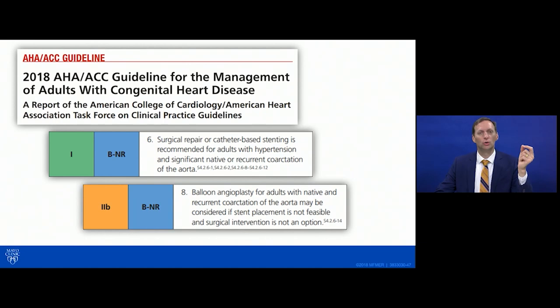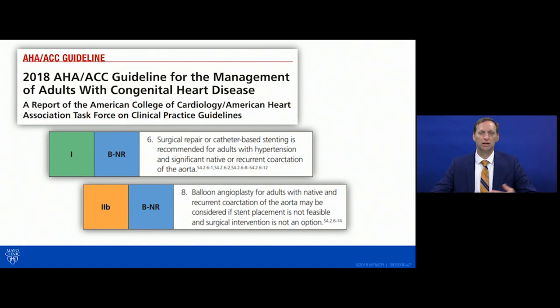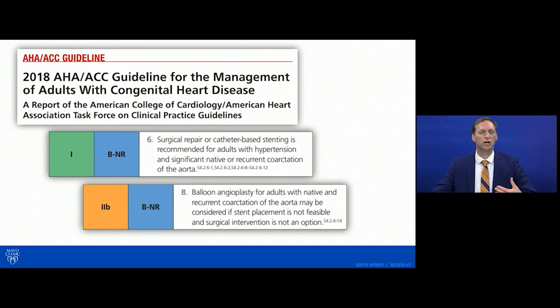Returning to the adult guidelines: for adults with hypertension and significant coarctation, both surgical repair and catheter-based stenting are recommended. European Society of Cardiology guidelines from 2020 actually favor stent implantation over surgery when anatomy is suitable. Balloon angioplasty alone is mentioned as an option when stenting or surgery isn't feasible, but in practice we would always favor stent over angioplasty given the much higher risk of aortic wall injury with balloon angioplasty alone.